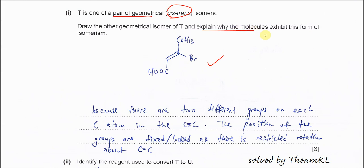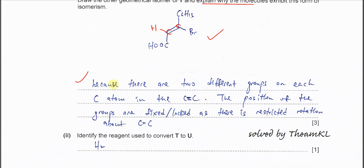After you draw this, explain why the molecules exhibit this form of isomerism cis-trans. Because this carbon and this carbon - both of these carbons have different groups. This carbon has one hydrogen and one COOH. This carbon has C3H13 and bromine. So therefore it can form cis-trans because this carbon has two different groups. So this is the explanation. After you put there are two different groups on the C=C double bond on these two carbons, you can further explain why it forms cis-trans. Because the position of the groups, all these groups, they are fixed or locked, because there is restricted rotation about the C=C double bond. The C=C double bond cannot be rotated. That's why all these positions are fixed, cannot move.